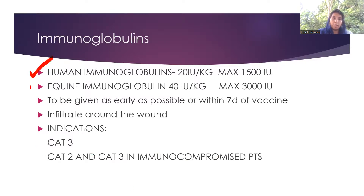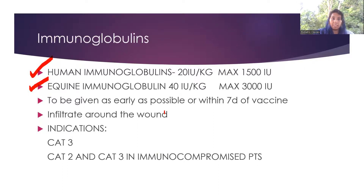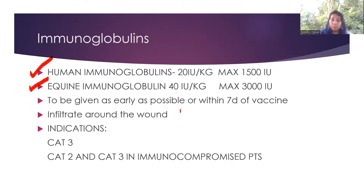Immunoglobulins come in two types — human rabies immunoglobulin (HRIG) at 20 IU per kg with a maximum of 1500 IU, and equine rabies immunoglobulin (ERIG) at 40 IU per kg with a maximum of 3000 IU. Both should be given as early as possible or within seven days of the vaccine. The immunoglobulin should be infiltrated maximally around the wound. If the wound is large and the volume is insufficient, dilute with saline. Indications are category three exposures and immunocompromised patients with category two exposures.